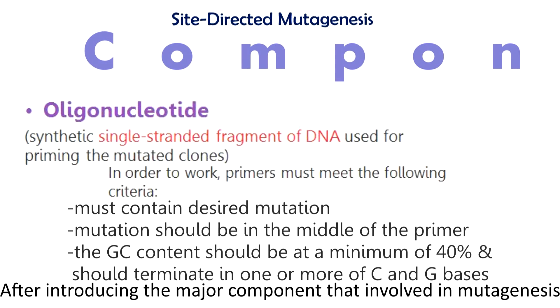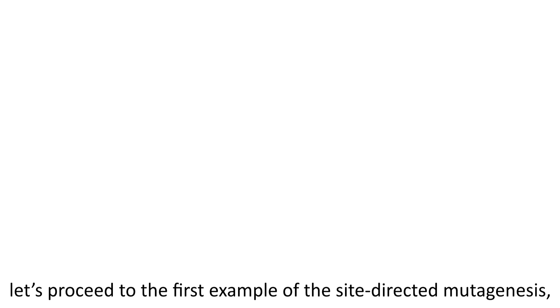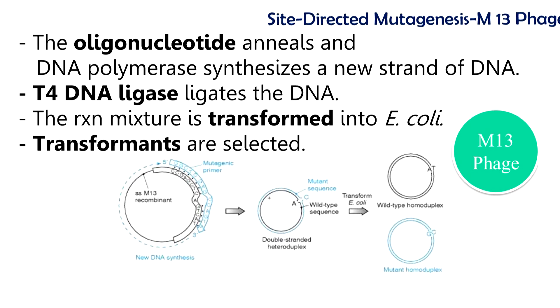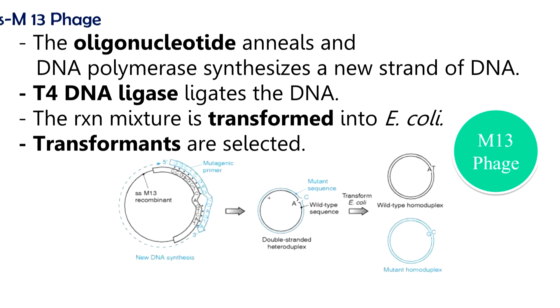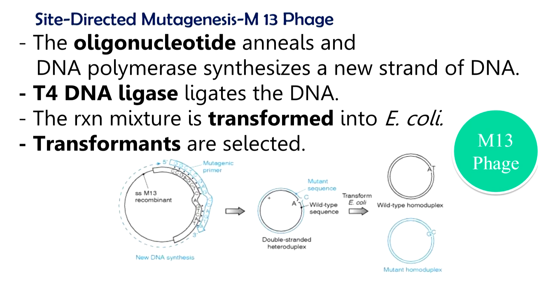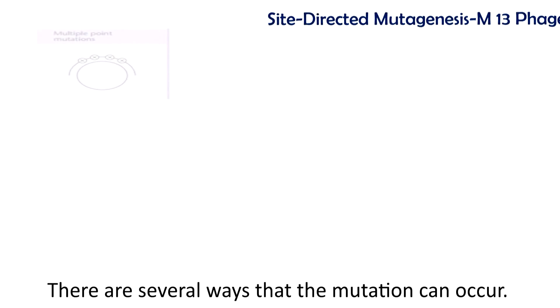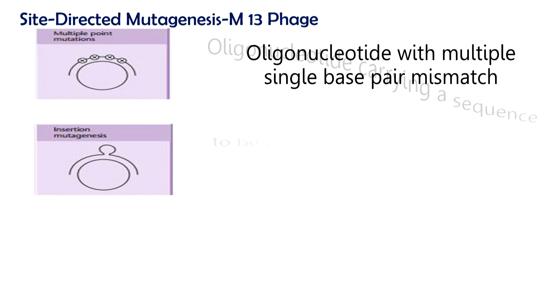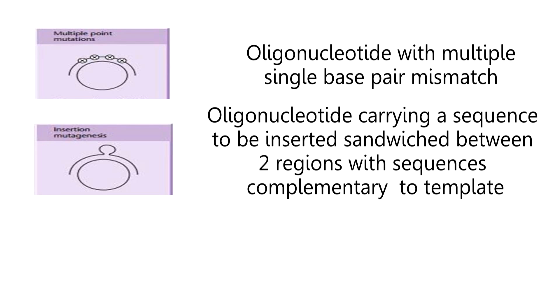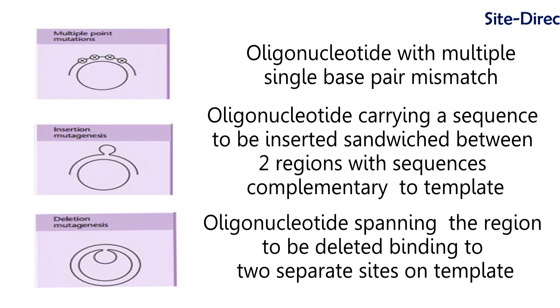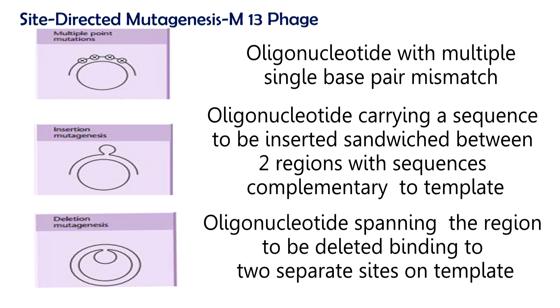Let us proceed to the first example of site-directed mutagenesis, which is M13-based mutagenesis. The mechanism is as follows: firstly, the oligonucleotide anneals and DNA polymerase synthesizes a new strand of DNA. After that, T4 DNA ligase will ligate the DNA. The reaction mixture is then transformed into the competent cell, E. coli, and the transformants are then selected. Oligonucleotide can be designed with multiple single-base pair mismatches, or carrying a sequence to be inserted sandwiched between two regions complementary to the template. Also, oligonucleotide can be designed by spanning the region to be deleted, binding to two separate sites on the template, resulting in deletion mutagenesis.